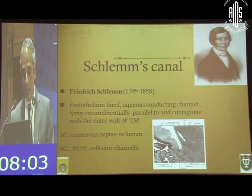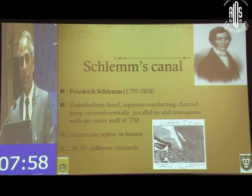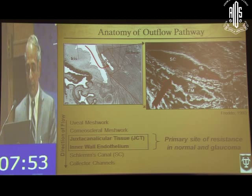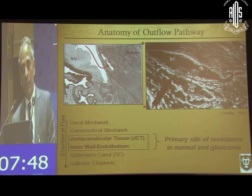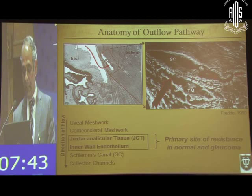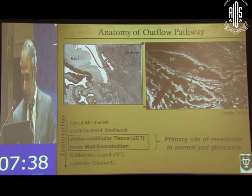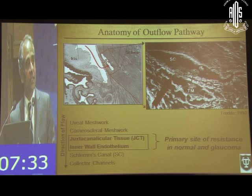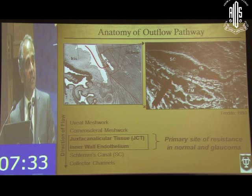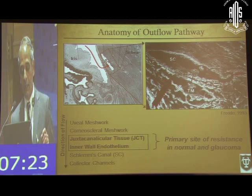This is not a continuous canal — it's broken into separate segments by numerous septae, and the canal drains the aqueous fluid into collector channels, while the collector channels drain into the episcleral venous pathways. On electron microscopy, you can see the aqueous crossing the trabecular meshwork into the canal, and the pathway leading to the collector channel. The juxtacanalicular complex, along with the inner wall of the endothelium, is the primary site of resistance, and that's what canal-based surgeries have to bypass.